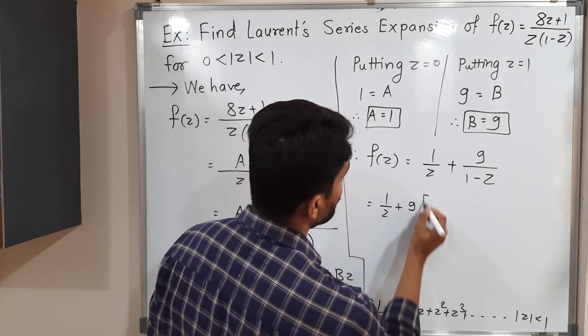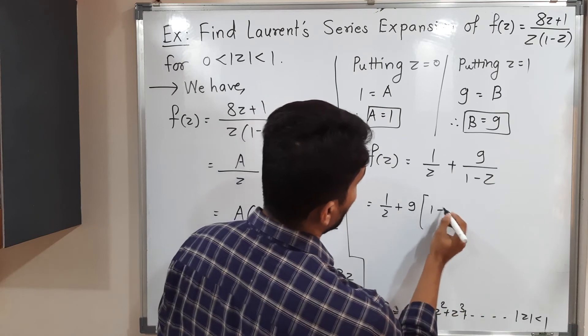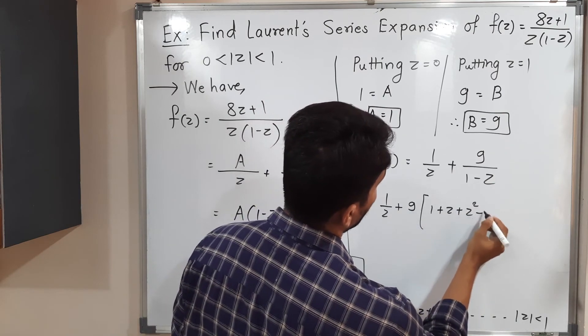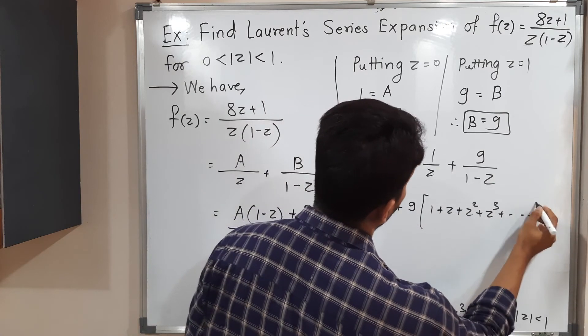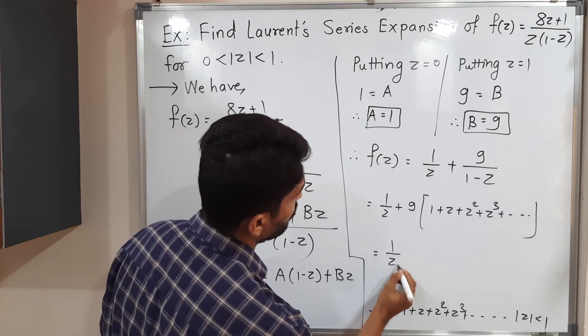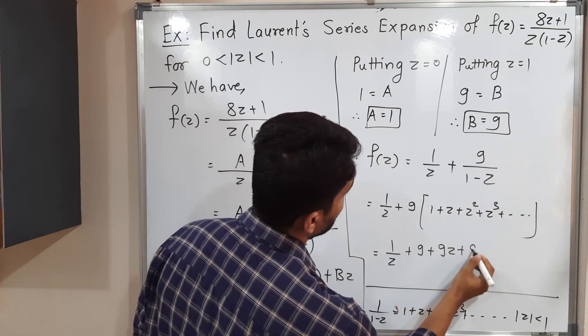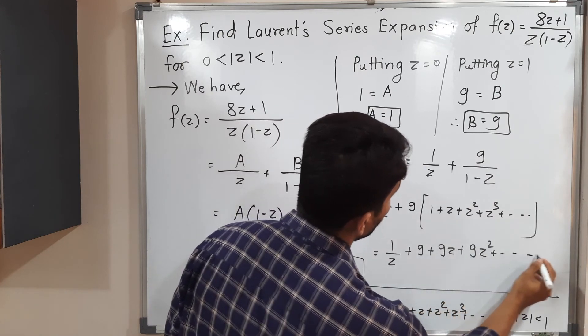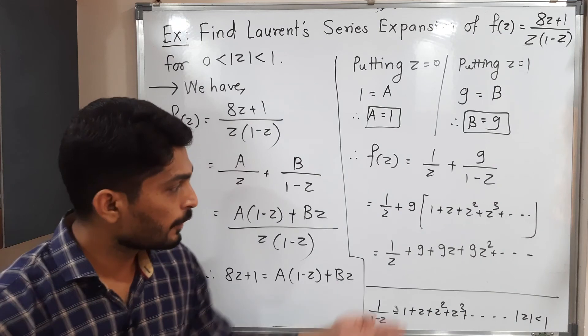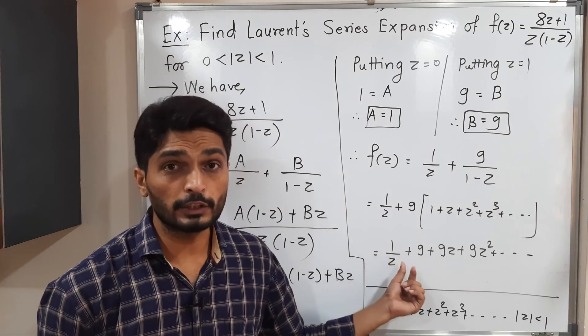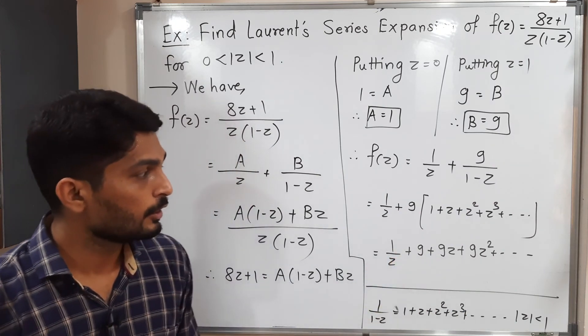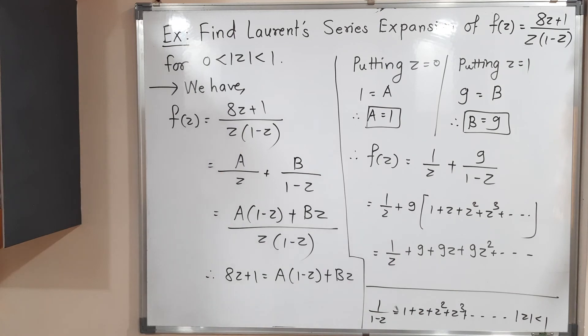9 is a constant, taking it outside. Let us apply the series 1 plus z plus z² plus z³ and so on. That means if we expand, 1 by z plus 9 plus 9z plus 9z² plus and so on. This is the required Laurent series, where other than the first term, z appears in the numerator. So that is the analytic part. And only for the first term z is in the denominator. That is the principal part of the Laurent series.